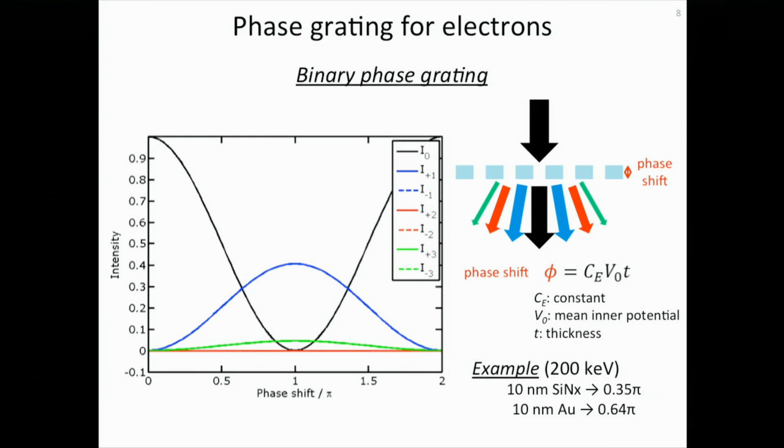In the following talk, I will focus on the simplest phase plates, which is a binary phase grating for electrons, as shown in the schematics here. The figure on the left shows the intensities of diffracted beams as a function of the phase shift imposed by this binary phase grating. This phase shift can be estimated by the equation here, which is just the product of a constant, which depends on the electron energy, the mean inner potential, which is the material property, and the thickness of the binary phase grating. For example, if we have 200 keV incoming electrons, a 10 nanometer silicon nitride will give about 0.35π phase shift, and 10 nanometer gold will give about 0.64π phase shift.